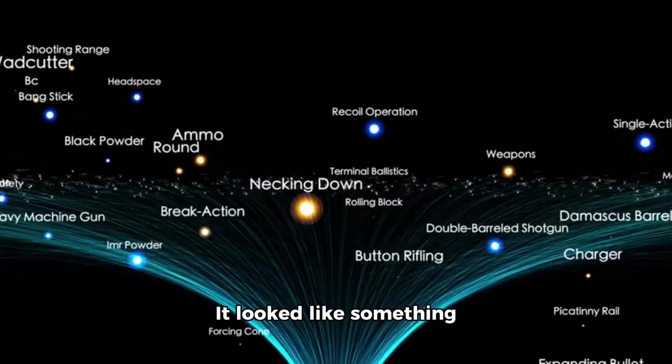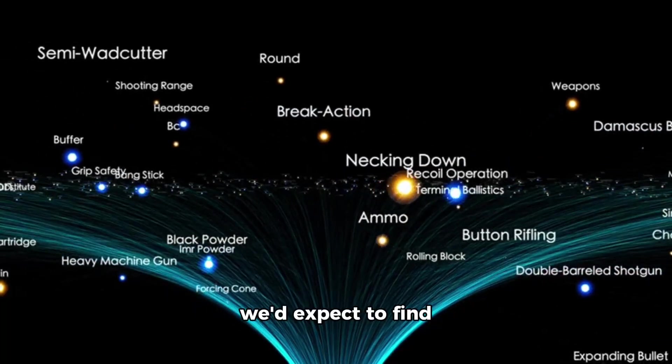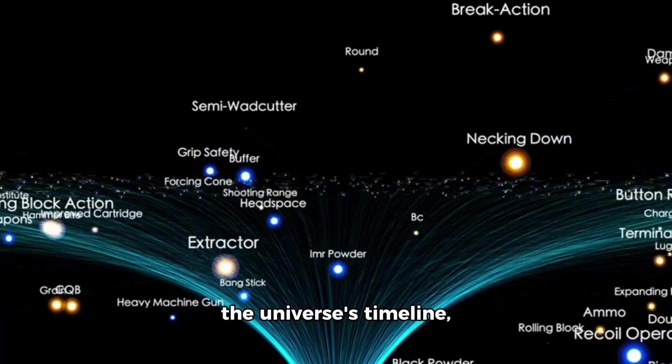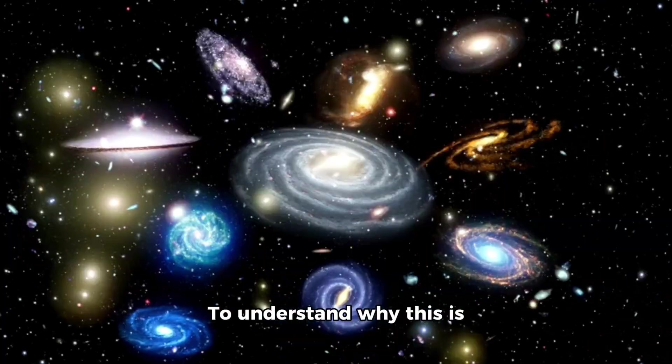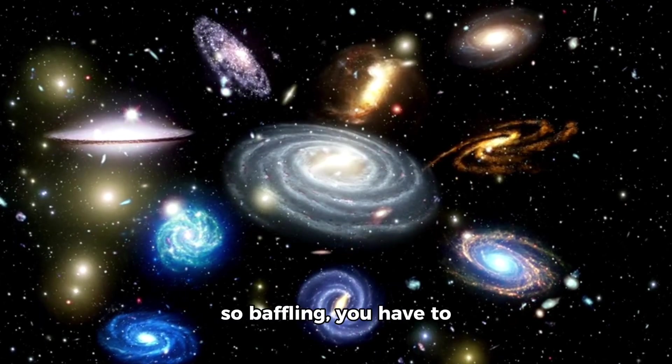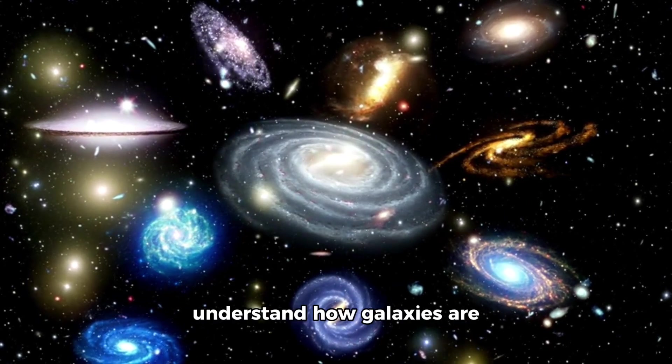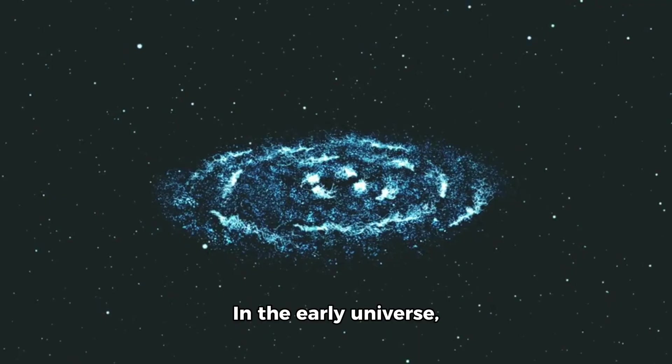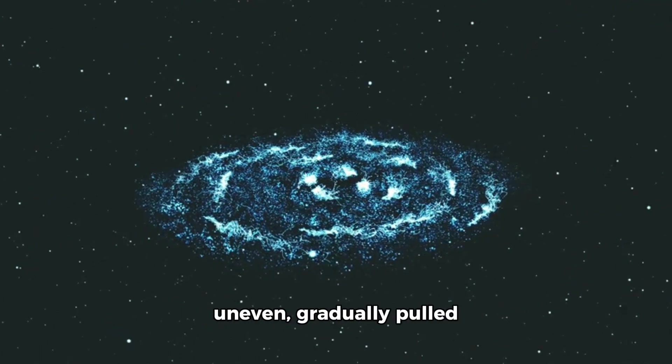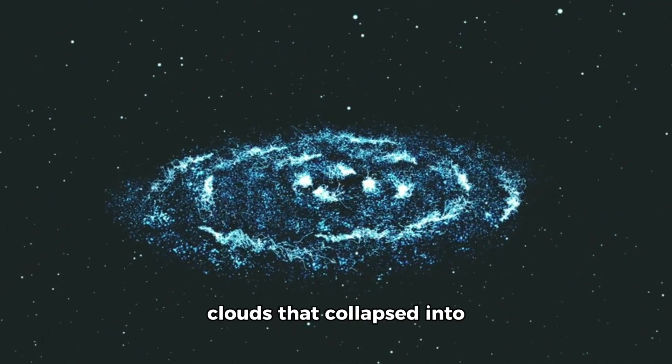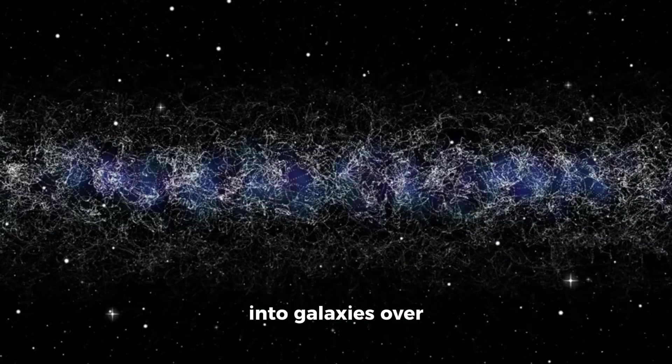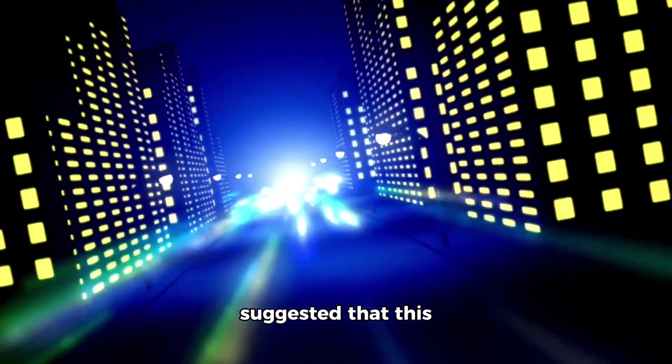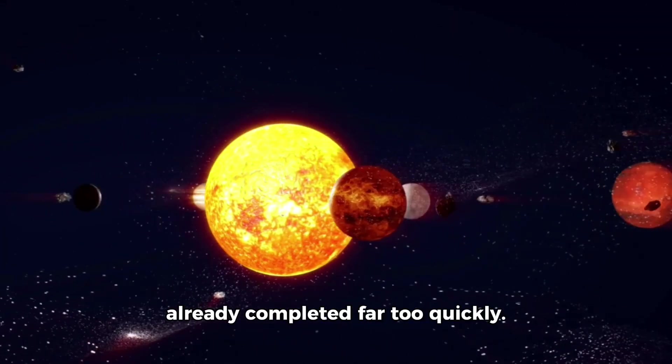And not just barely. It looked like something we'd expect to find several billion years into the universe's timeline, not within the first few hundred million years after the Big Bang. To understand why this is so baffling, you have to understand how galaxies are thought to evolve. In the early universe, matter was spread thin and uneven, gradually pulled together by gravity into clouds that collapsed into stars, which then grouped into galaxies over enormous time frames. But what Webb saw suggested that this entire process had already completed far too quickly.